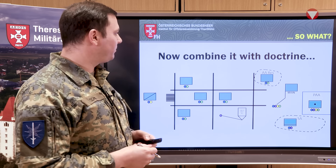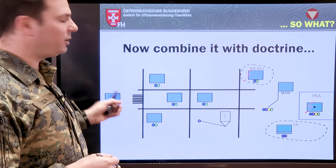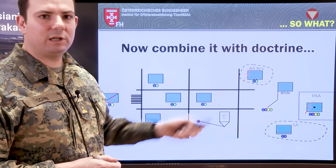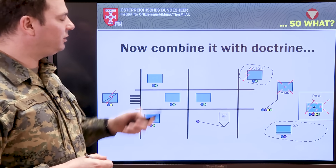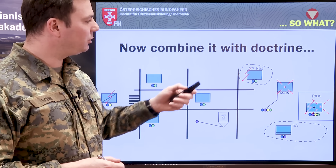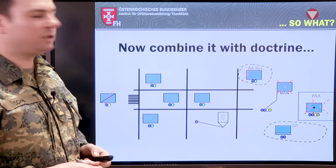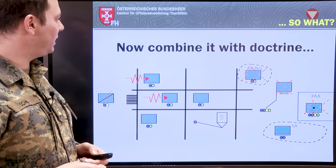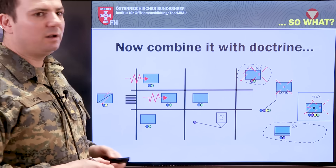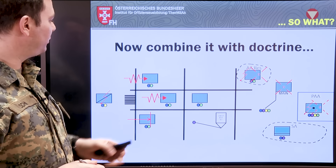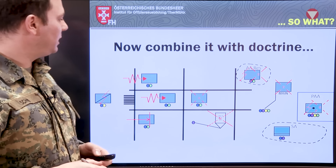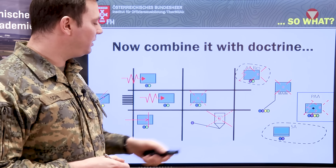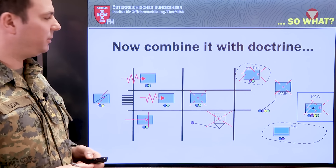Now it's the enemy's turn. They want to know where the recce is, where the reserve is, and where the artillery is — in order to destroy the command post, suppress the artillery, destroy the reserve, fix the units in front, penetrate the lower unit, suppress depth, and neutralize the unit maintenance collection point.